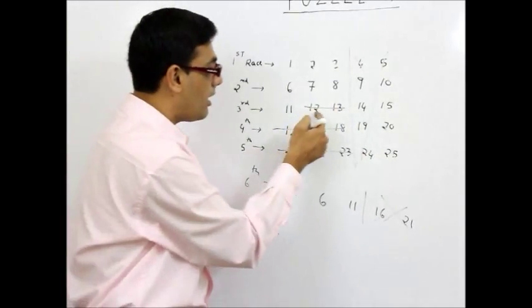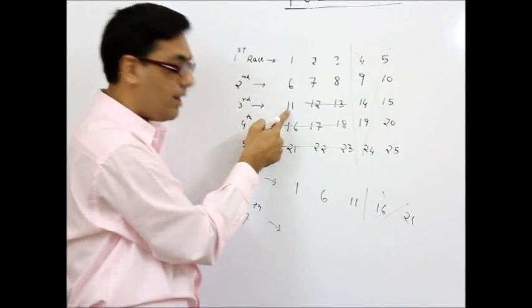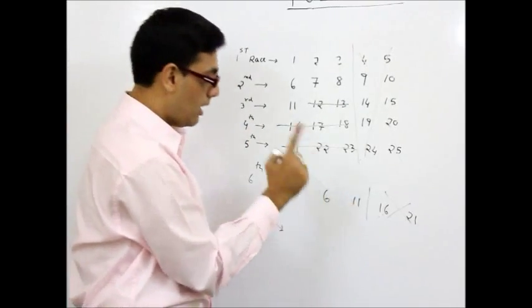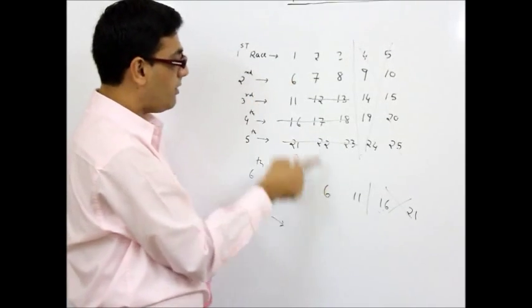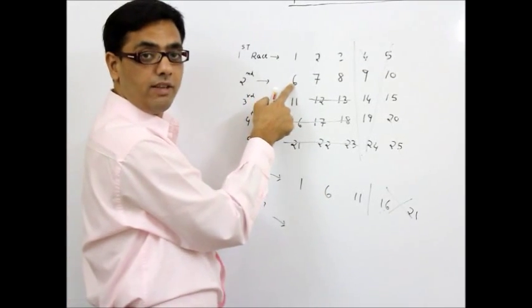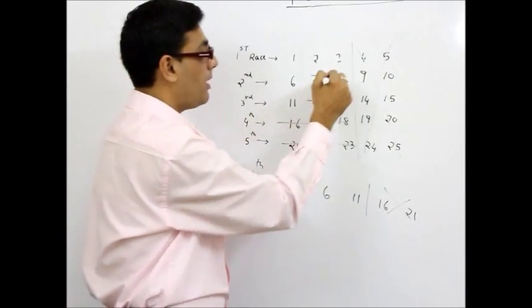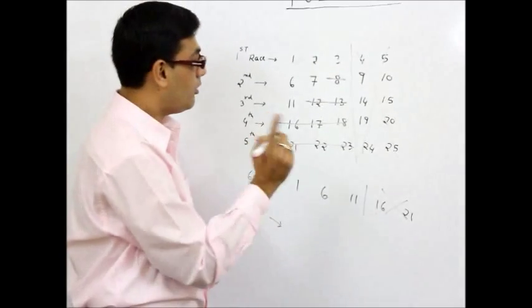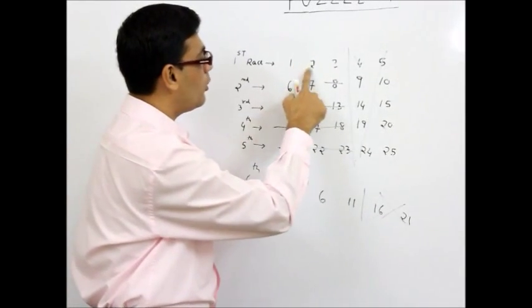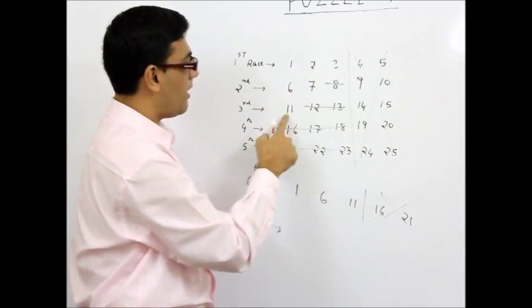By the same logic, this horse can come at best second. This can be the second horse. So this can be third horse. But this is definitely out of contention. And so, I am remaining with 1, 2, 3, 6, 7 and 11. These are my 6 horses.